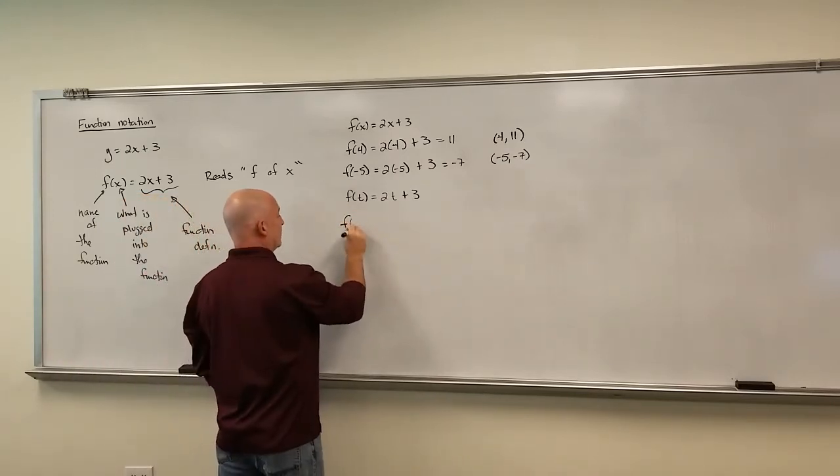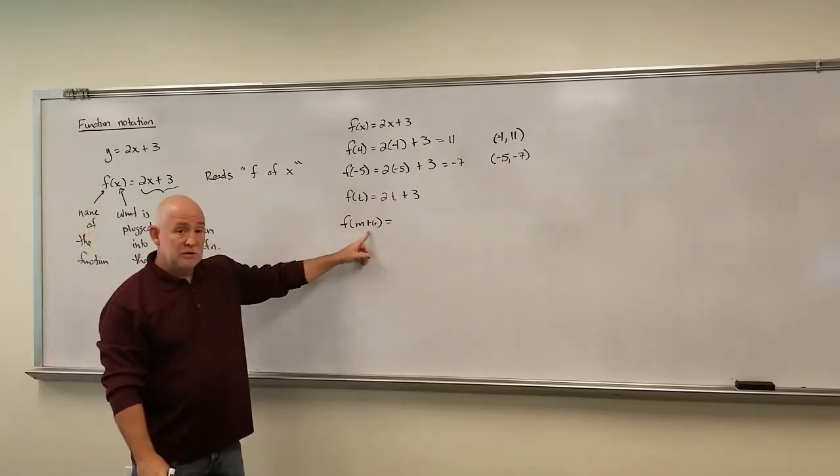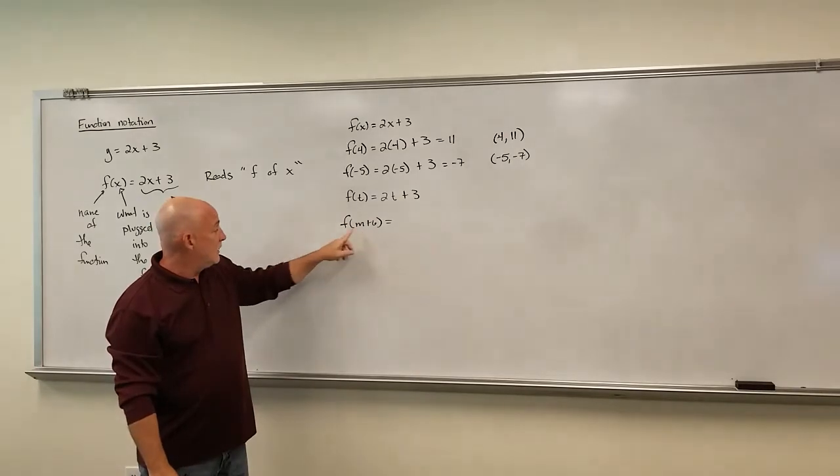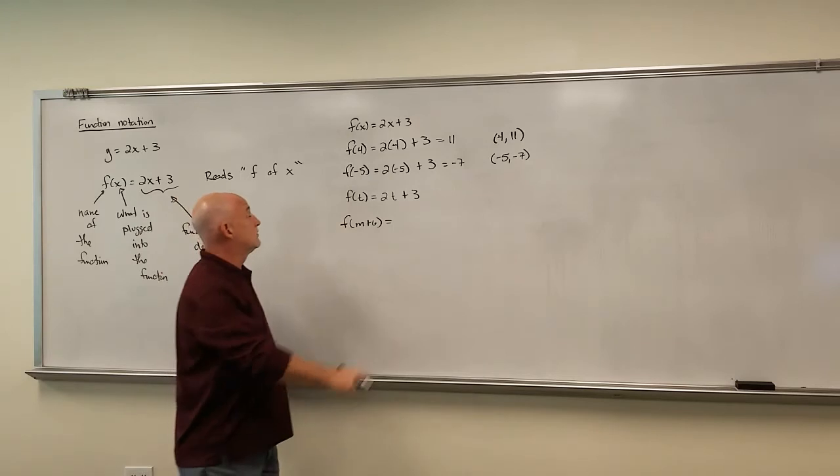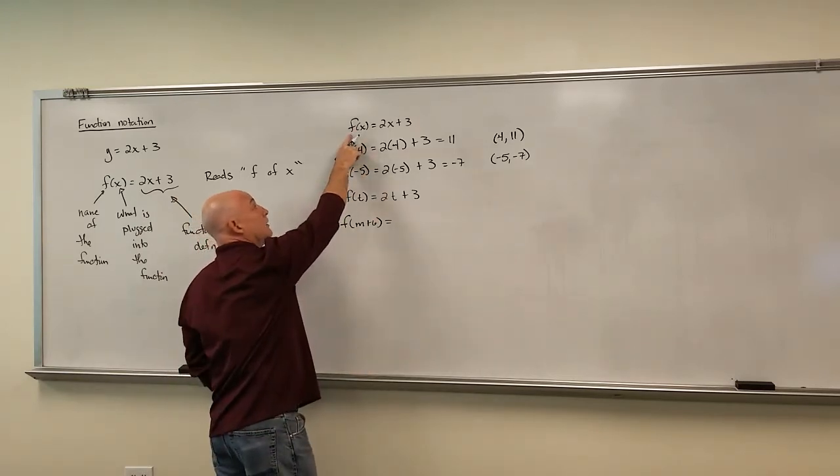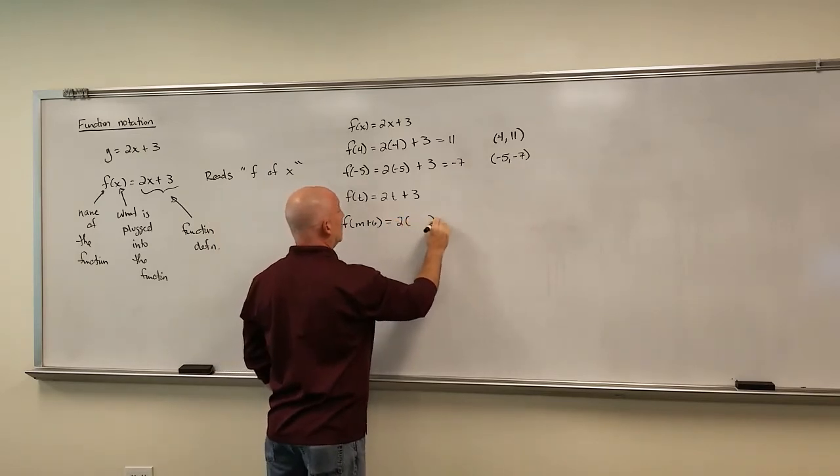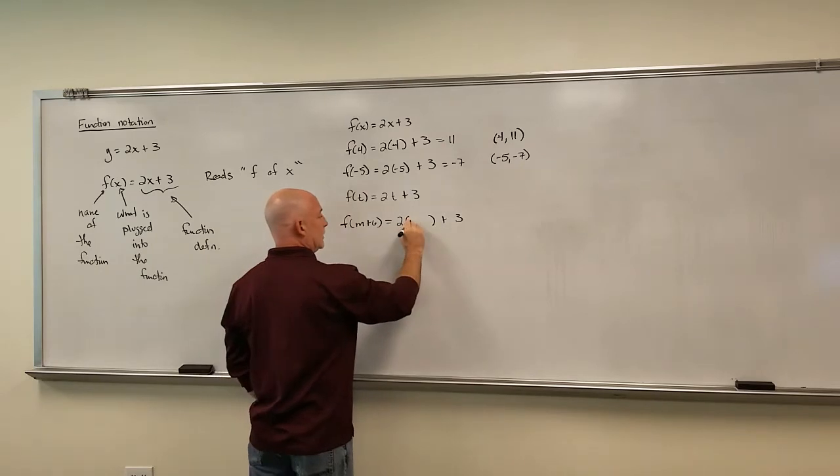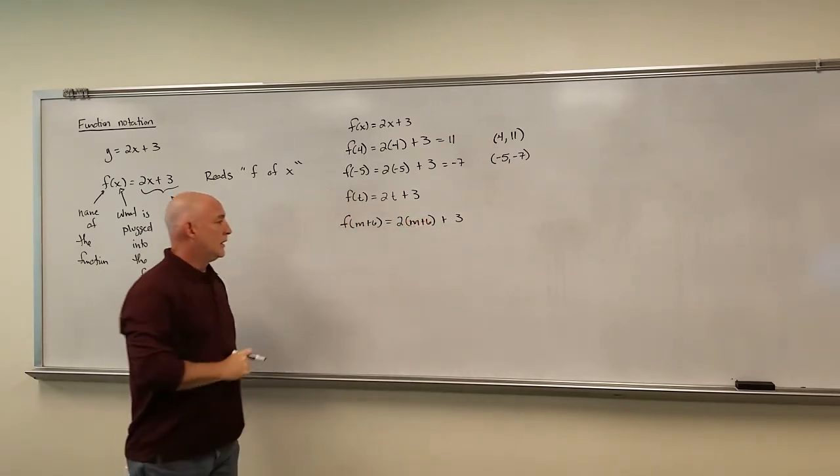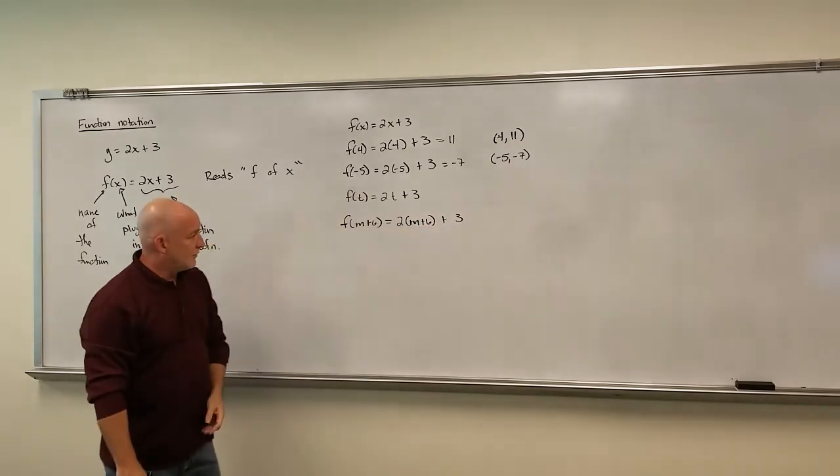Another thing, what if I said, what is f of m plus 6? Real scary looking. Again, just because there's something scary here doesn't change anything. This says find a function named f, and everywhere there's a spot, plug in an m plus 6. So I'm going to take the top one because that's the easiest one to do. And I'm going to replace all the x's with m plus 6. Again, using parentheses here makes it a little bit easier. So this is going to be 2(m plus 6) plus 3. Now for a textbook, they'd probably distribute and simplify, but just for the concept, I'm going to leave it right there.